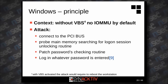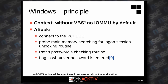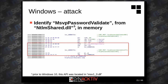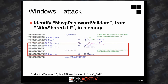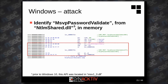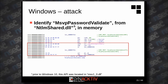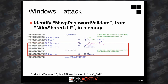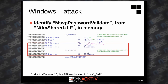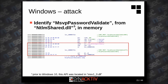Let's see in more detail how to do this. We are probing main memory searching for the unlocking routine. This routine is called MSVPasswordValidate and is located in msv1_0.dll. I've highlighted in red the RtlCompareMemory API which is used in this routine to compare the entered password with the valid password.